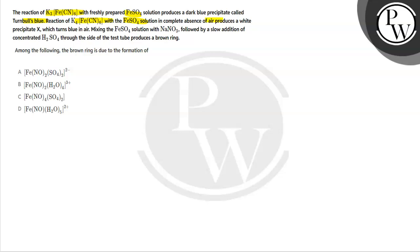This white precipitate X turns blue in air. Mixing the FeSO4 solution with NaNO3 followed by slow addition of concentrated H2SO4 through the side of the test tube produces a brown ring. Among the following, the brown ring is due to the formation of which compound?